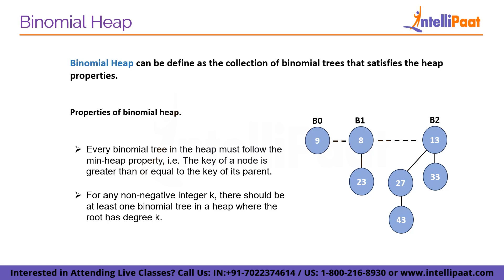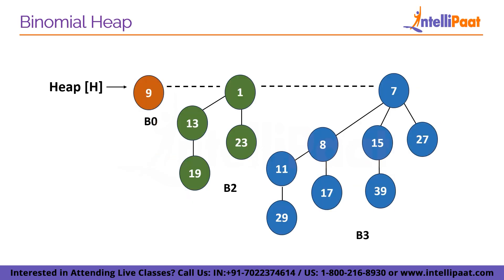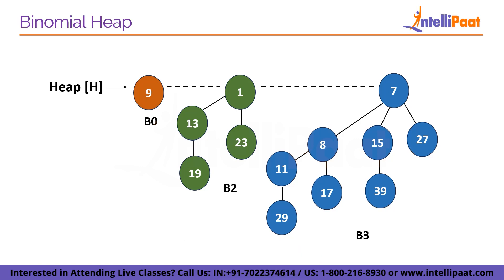The second property ensures that a binary tree with n nodes should have at most 1 + log₂n binomial trees, where log₂ is the binary logarithm. If these statements are not yet clear, we will try to understand with examples. The figure has three binomial trees: B0, B2, and B3. All three binomial trees satisfy the min heap property as all nodes have a smaller value than their child nodes. This also satisfies the second property of binomial heap. For example, if we consider k as 3, we can observe in the figure that the binomial tree of degree 3 exists in the heap.